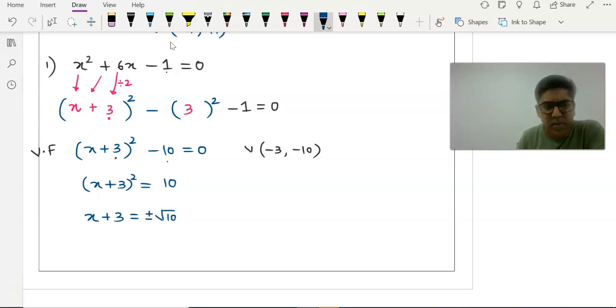We will move 3 to the right side. So positive 3 will become negative 3 plus or minus √10. We will separate and write the two answers. So x = -3 + √10 or x = -3 - √10.